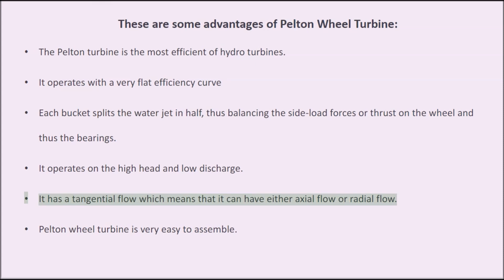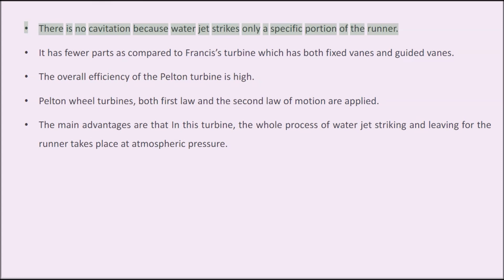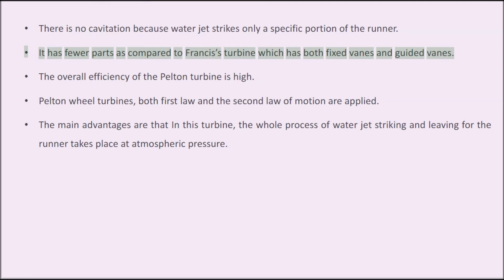It has a tangential flow, which means it can have either axial flow or radial flow. The Pelton wheel turbine is very easy to assemble. There is no cavitation because the water jet strikes only a specific portion of the runner. It has fewer parts compared to the Francis turbine, which has both fixed vanes and guide vanes. The overall efficiency of the Pelton turbine is high.